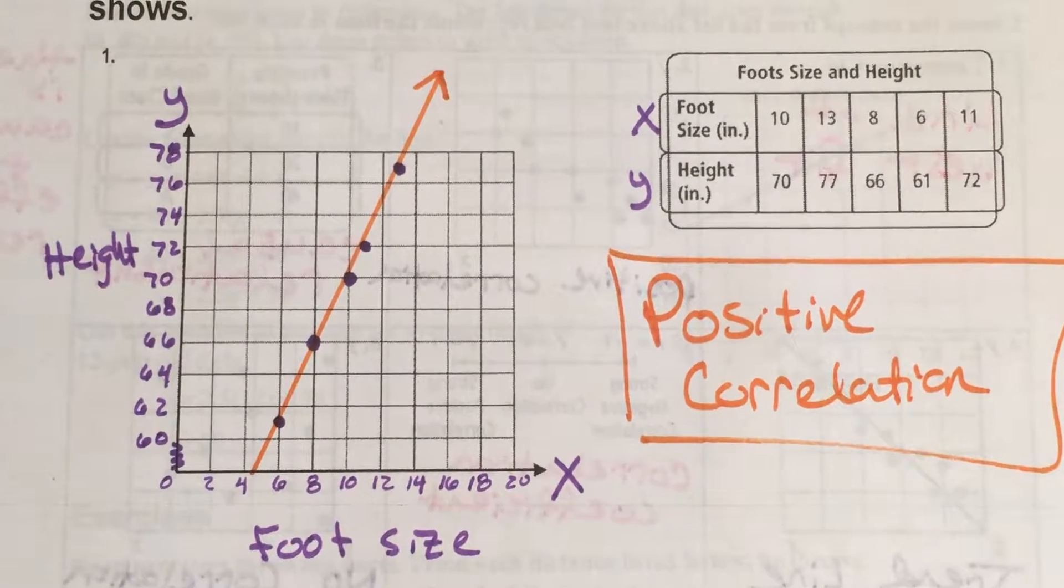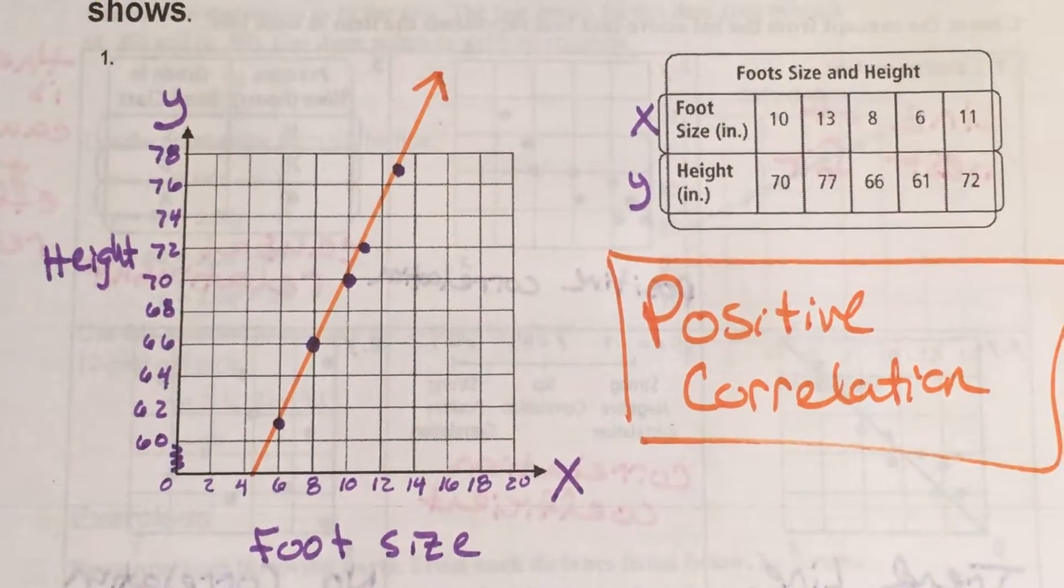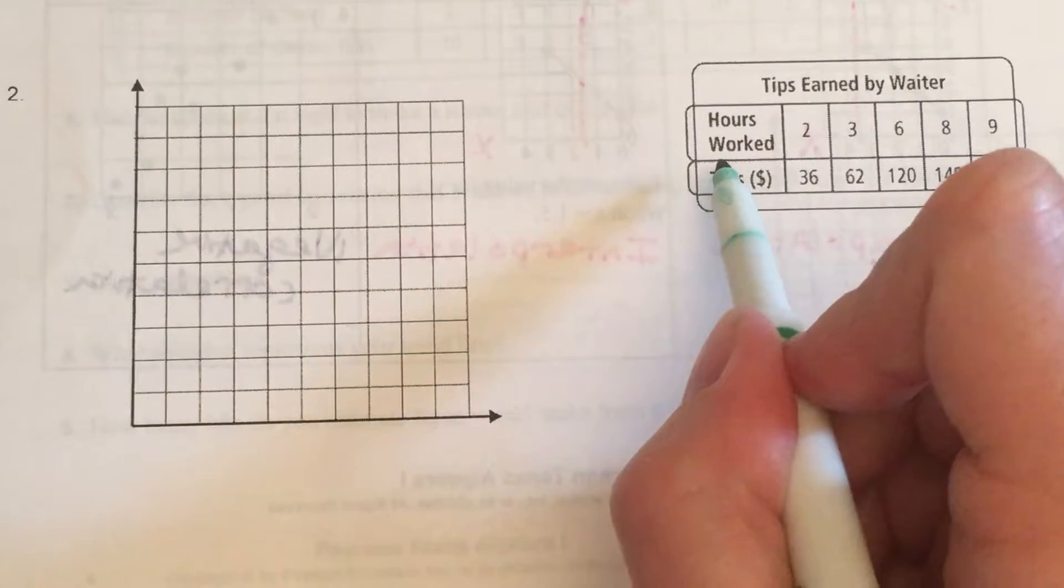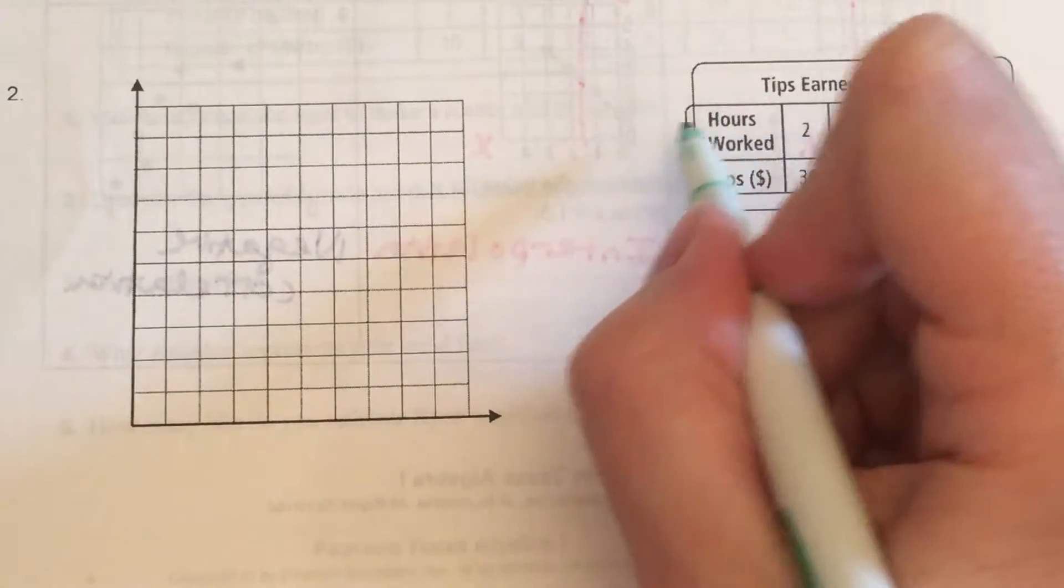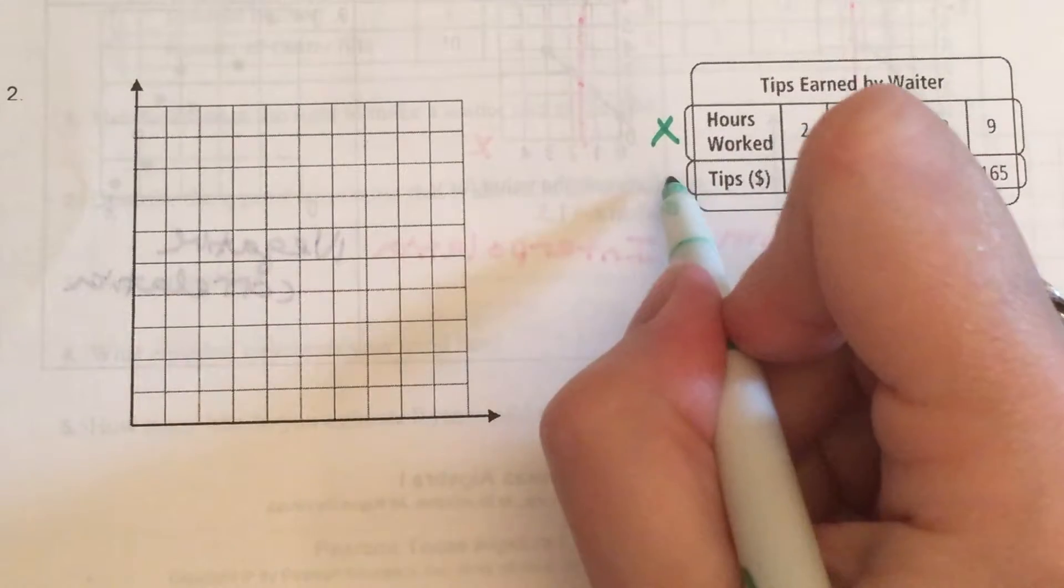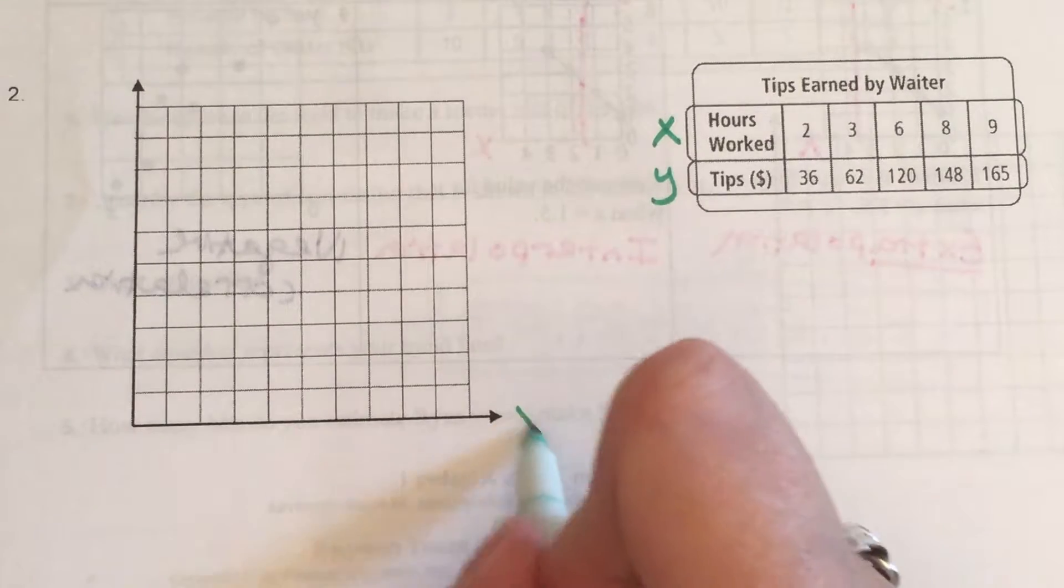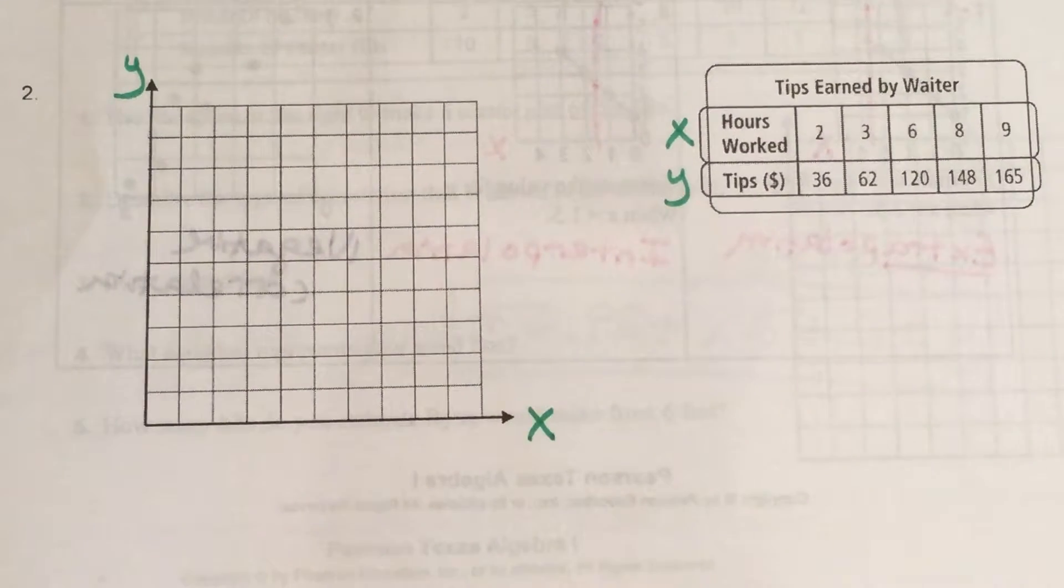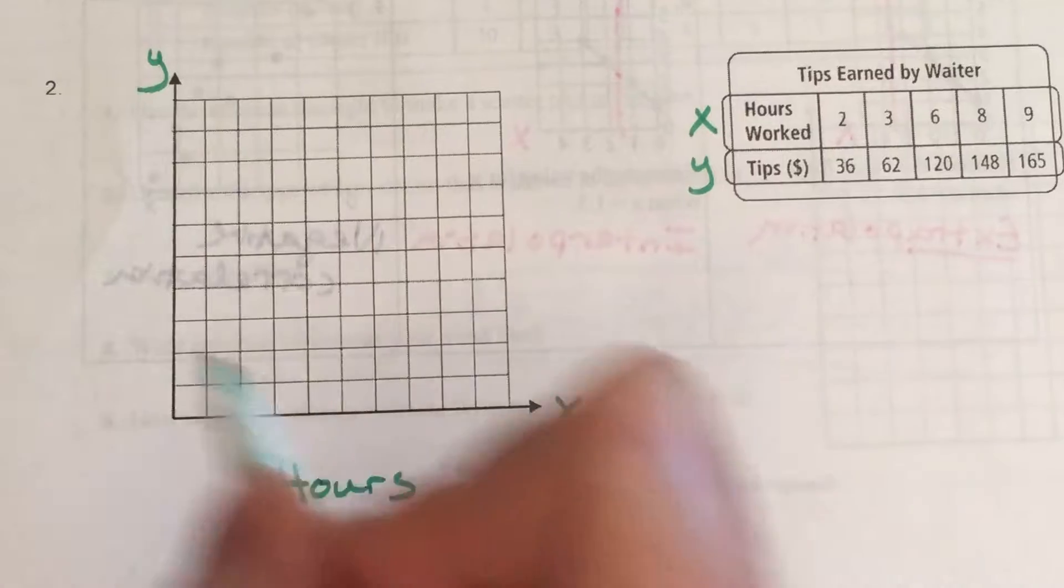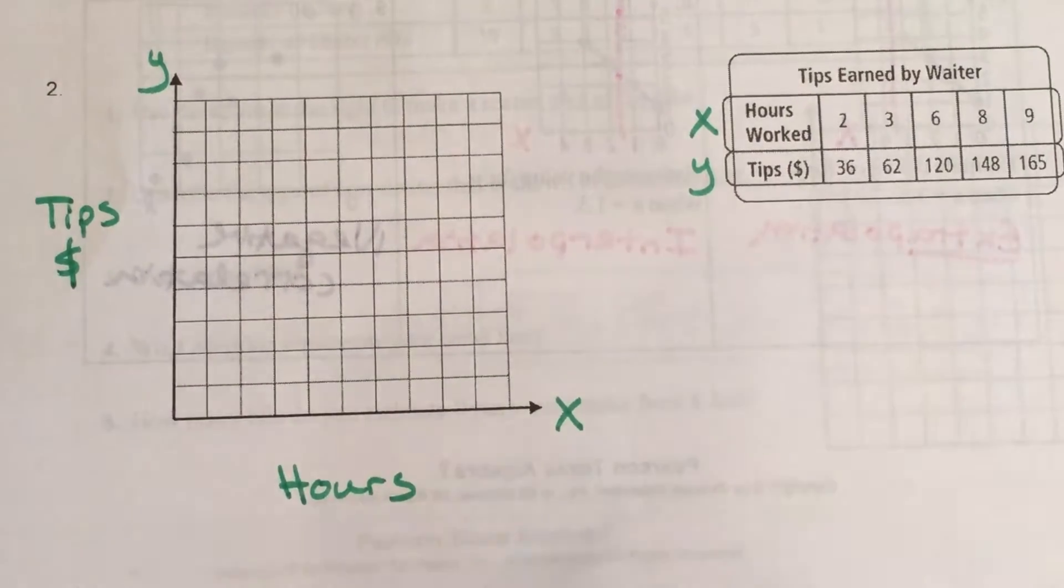All right. Let's try this again with problem number two. In problem number two, we have the hours worked. We have the money. Time. Time is hours. That is always X unless you are specifically told otherwise. And your result is Y. That's the money that you earned. Those are the tips. Here is your X and Y axes. Must label these. So this is hours and tips. Money. Money is great.